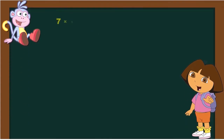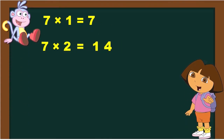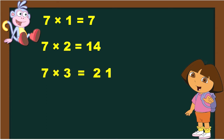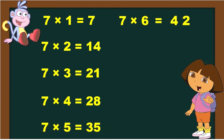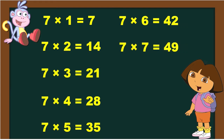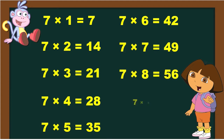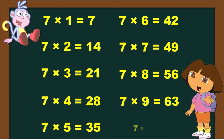7 1s are 7. 7 2s are 14. 7 3s are 21. 7 4s are 28. 7 5s are 35. 7 6s are 42. 7 7s are 49. 7 8s are 56. 7 9s are 63. 7 10s are 70.